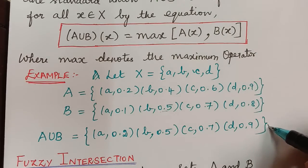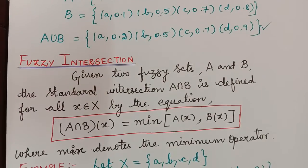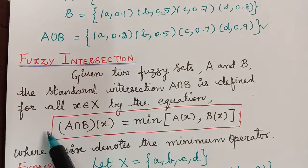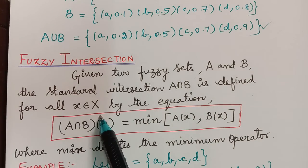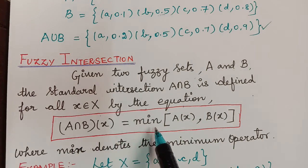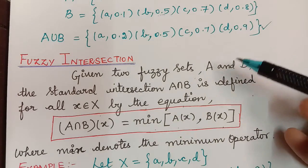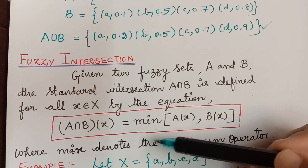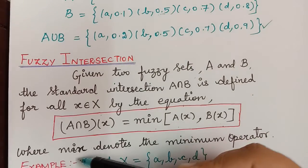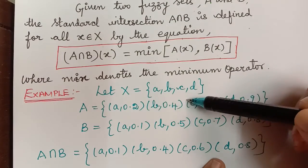Next we shall move on to fuzzy intersection. Given two fuzzy sets A and B, the standard intersection A∩B is defined for all x ∈ X by: (A∩B)(x) = min(A(x), B(x)), where min denotes the minimum operator. Unlike union which uses maximum, intersection uses the minimum.